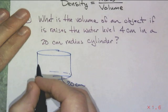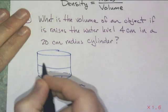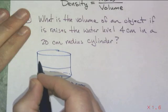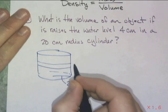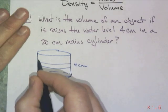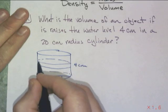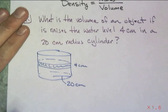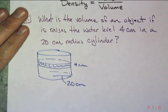And so here's my water level here, and then my new water level was here, and that's 4 centimeters. So whatever got submerged in there, it's just like that little cylinder. Alright, so now we need to find the volume of that cylinder.